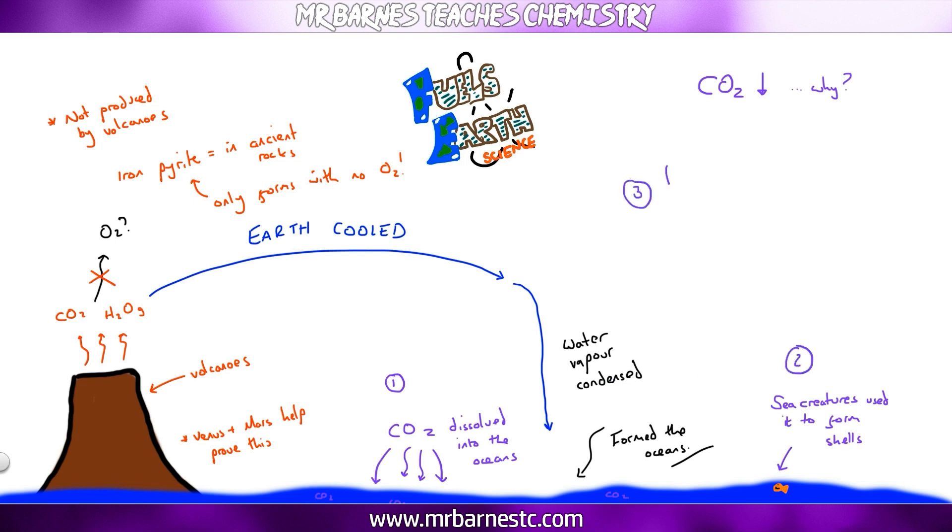And then finally, plants started to evolve. You've guessed it, photosynthesis occurred. So carbon dioxide was taken in and oxygen was produced.